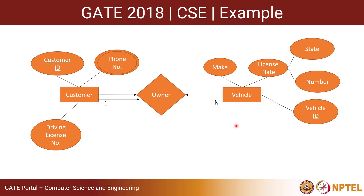Customer and vehicle are two entities related through a relationship called 'owner'. If a customer buys a vehicle, one customer can buy any number of vehicles, so we have a one-to-many relationship. Customer participates totally in the relationship, meaning every entity of the customer is involved in at least one entity of the vehicle.